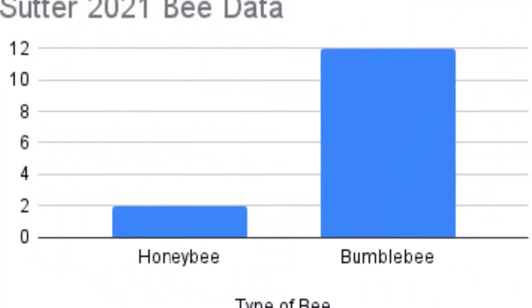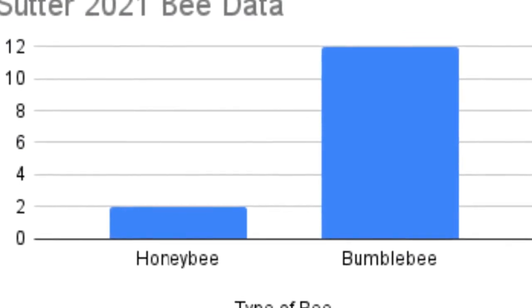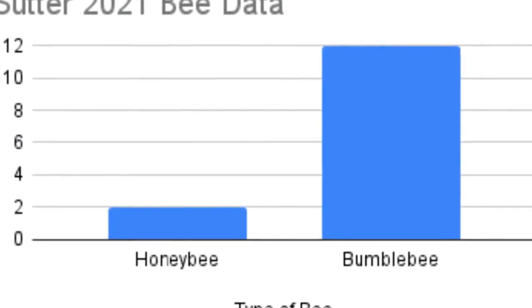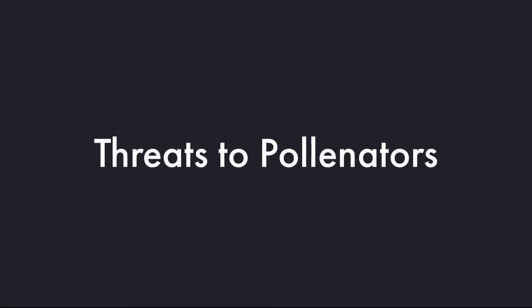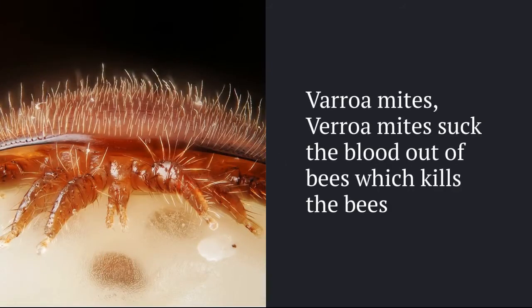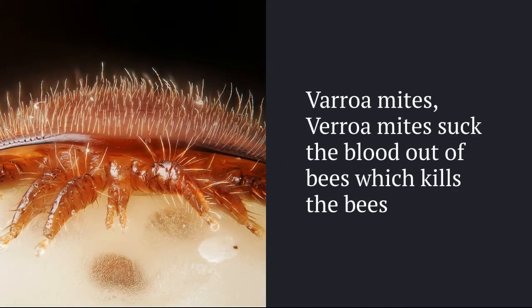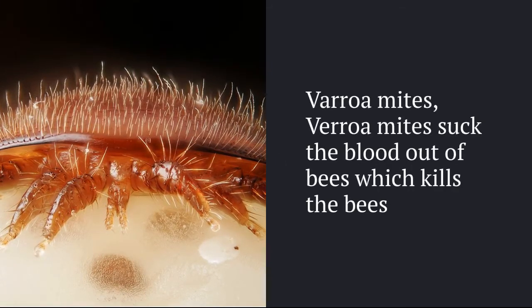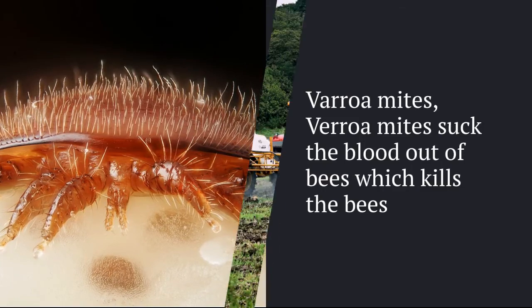Results: We have two honeybees and twelve bumblebees. Threats to pollinators include Varroa mites, which suck the blood out of bees and kill them.